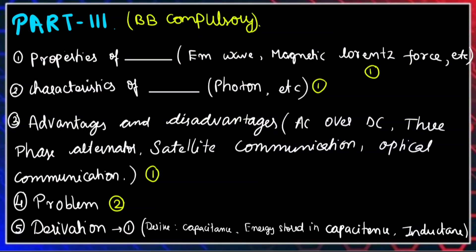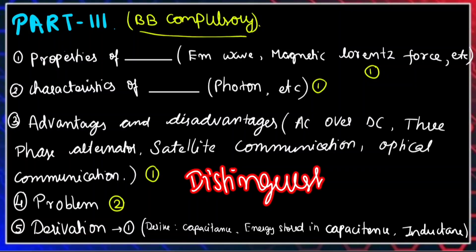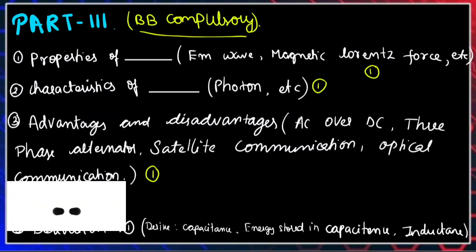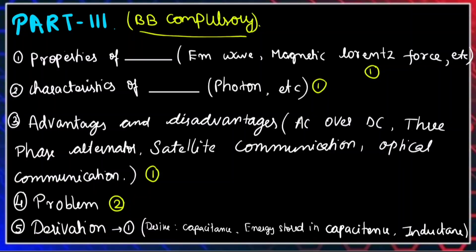In Part 3, you can learn all from the book pack. The question types include: properties of something, characteristics of something, advantages, disadvantages, and properties. There is also the 'distinguish between' question type — for example, distinguish between intrinsic semiconductor and extrinsic semiconductor, or distinguish between gravitational potential and Newton's gravitational law.